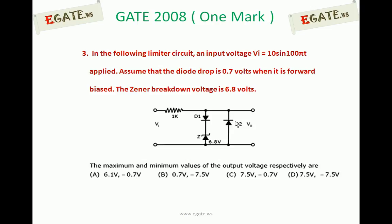In the following limiter circuit, an input voltage Vi = 10 sin(100πt) is applied. Assume that the diode drop is 0.7V when it is forward biased. The Zener breakdown voltage is 6.8V. The maximum and minimum values of output voltage respectively are: a) 6.1V and 0.7V, b) 0.7V and -7.5V, c) 7.5V and -0.7V, d) 7.5V and -7.5V.